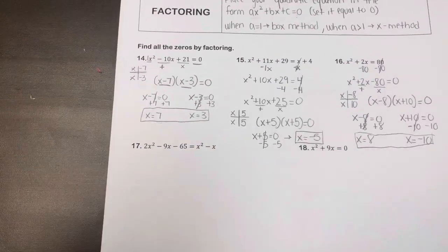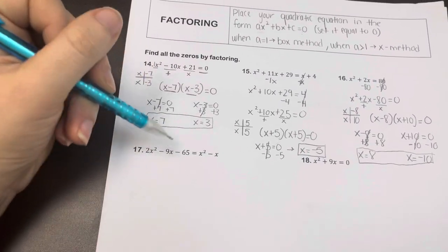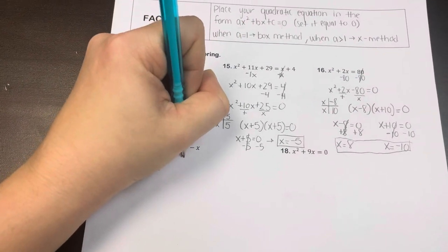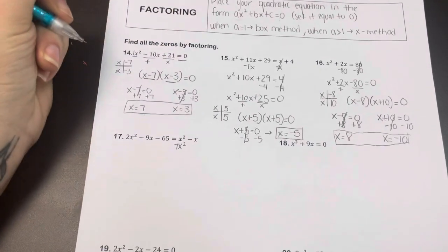Okay, for number 17, I'm going to need to get these two to the left-hand side. So I'm first going to subtract the x squared, which is just a 1x squared.